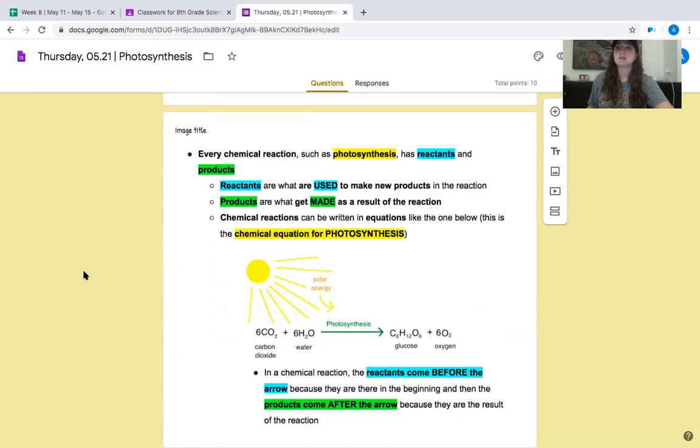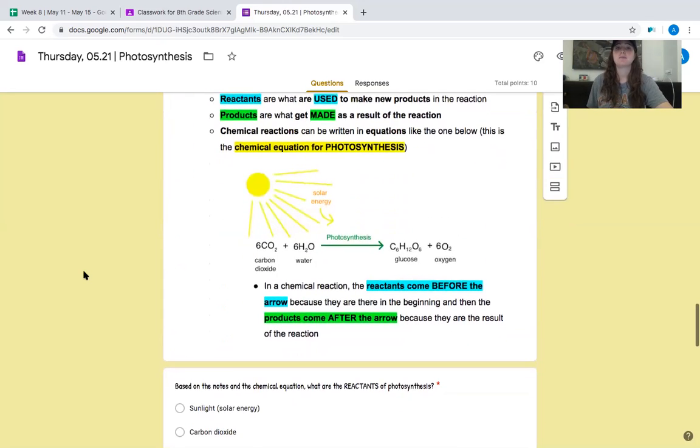All right, this is a little similar to yesterday. Every chemical reaction such as photosynthesis has reactants and products. Reactants are what are used to make new products in the reaction. Products are what get made as a result of the reaction. Chemical reactions can be written in equations like the one below. This is the chemical equation for photosynthesis. In a chemical reaction, the reactants come before the arrow because they are in the beginning, and then the products come after the arrow because they are the result of the reaction.